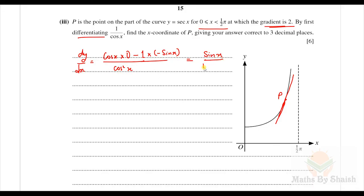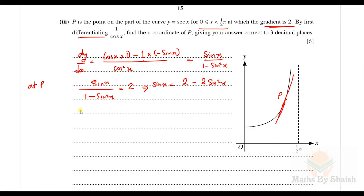Cross-multiplying: sin(x) = 2(1 - sin²(x)) = 2 - 2sin²(x). Rearranging: 2sin²(x) + sin(x) - 2 = 0. This is a quadratic in sin(x). Using the quadratic formula: sin(x) = (-1 ± √(1 + 16)) / 4 = (-1 ± √17) / 4.